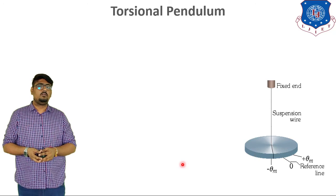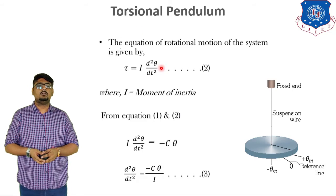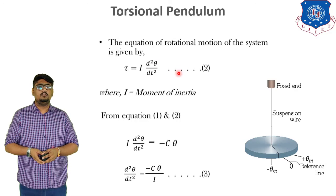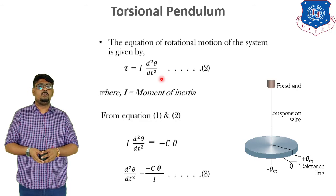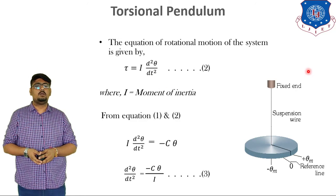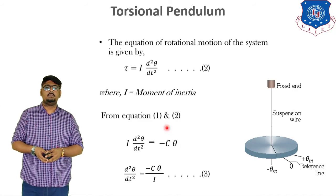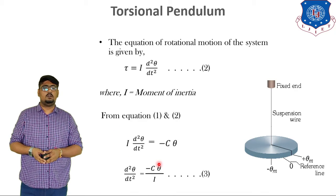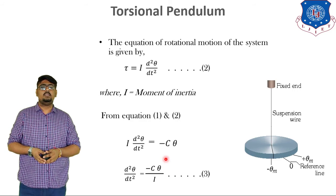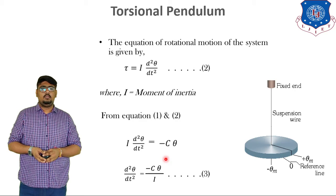So, the equation of the rotational motion of the system is given by tau is equal to I into d square theta by dt square, where I is the moment of inertia. Here, from equation 1 and 2, I d square theta by dt square is equal to minus C theta. We have compared the equations 1 and 2. So, the concluding equation becomes d square theta by dt square is equal to minus C theta by I.